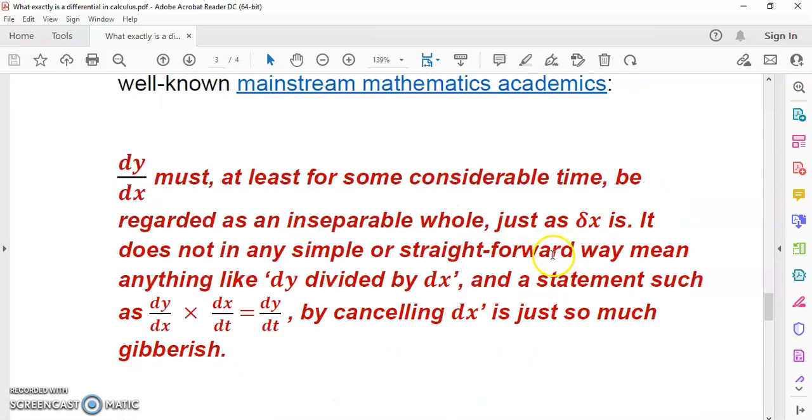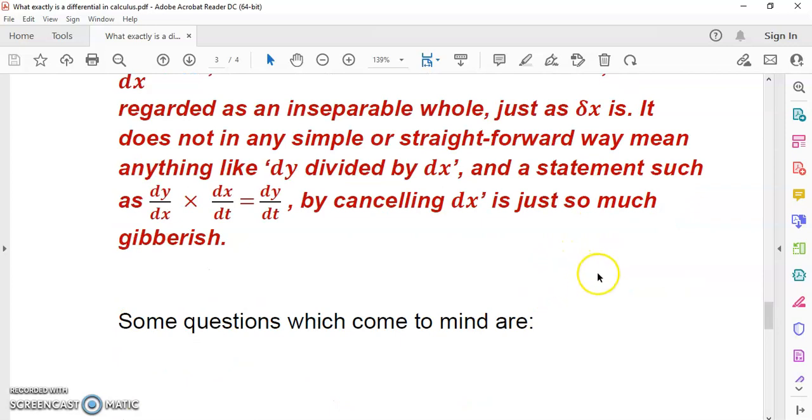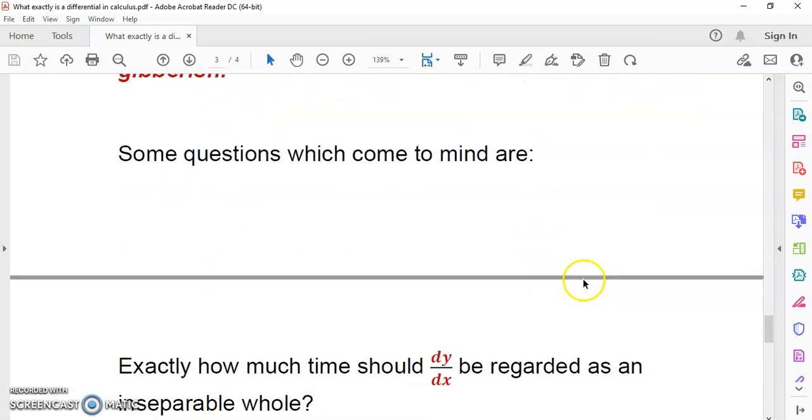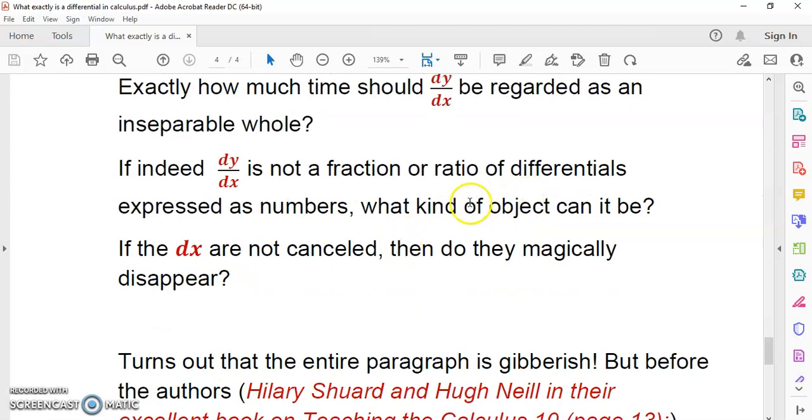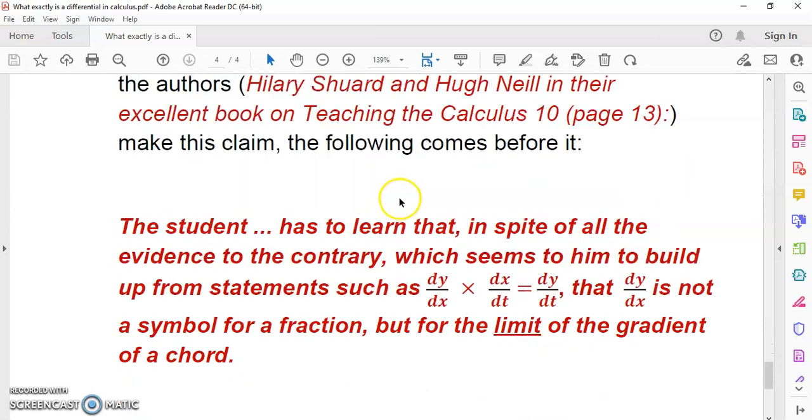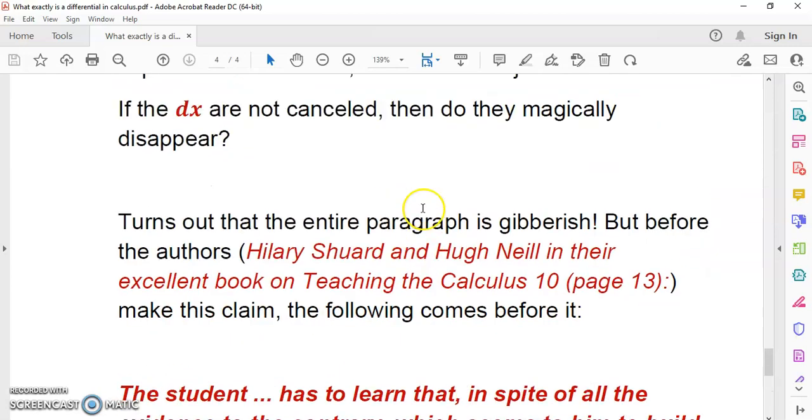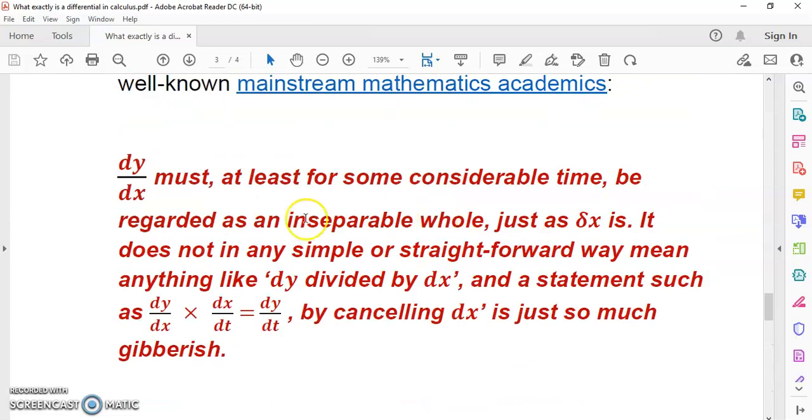It's not a coincidence. There is no such thing as a human that cannot do mathematics. Do you understand me? Every human being is capable of understanding mathematics. The only thing that a human doesn't understand are ill-formed concepts. So when you talk rubbish to students and you pollute their minds with such absolute shit like this, dy/dx must at least for some considerable time be regarded as an inseparable whole.